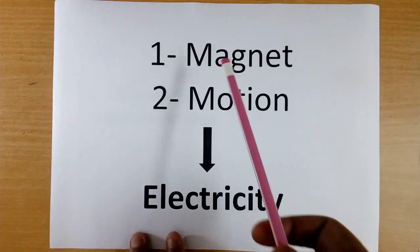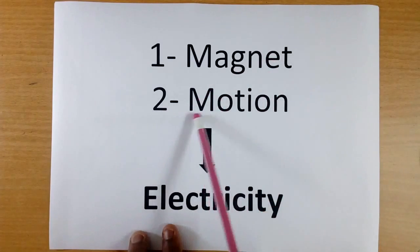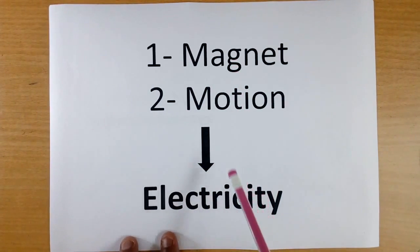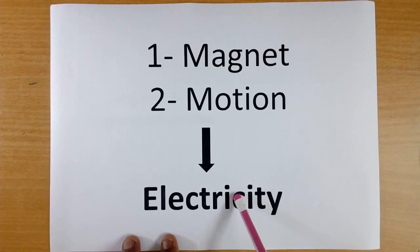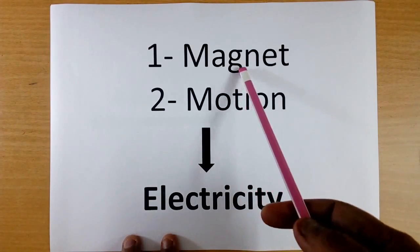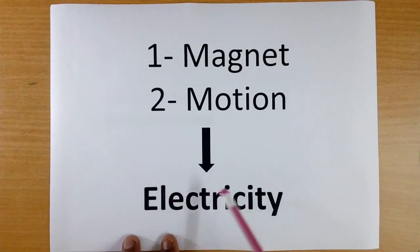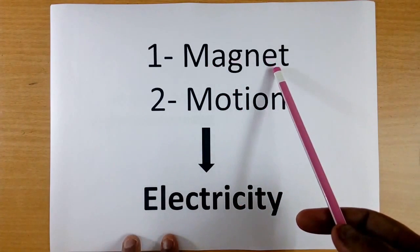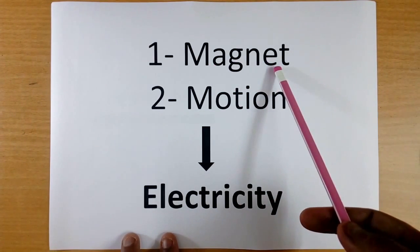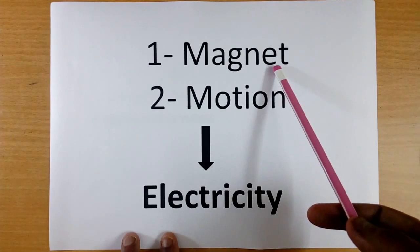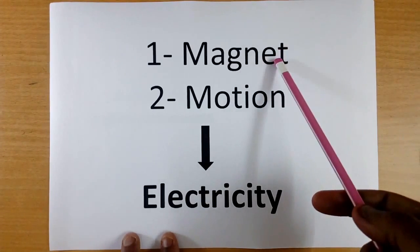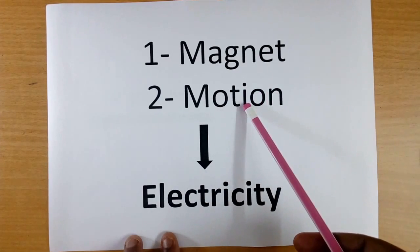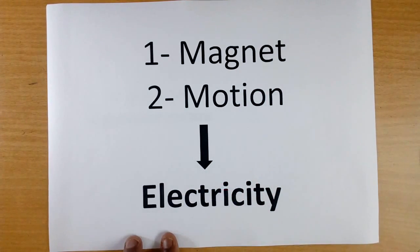Two things are required for making electricity. One is magnet, another is motion. If we have these two things, nature has made the rule. If we follow the method made by nature, then we can make electricity. Actually the magnet is not used directly — when we use the magnet, a field is created, and that field is used. But in simple terms, magnet and motion are required for making electricity.